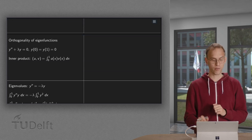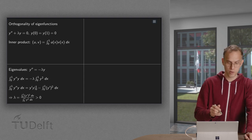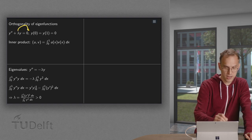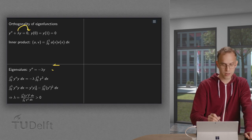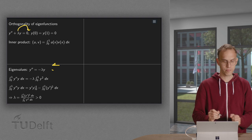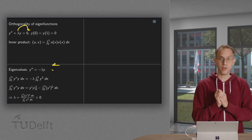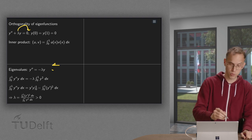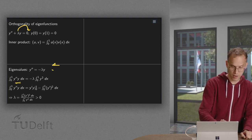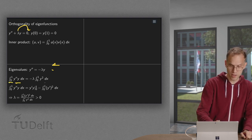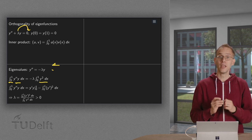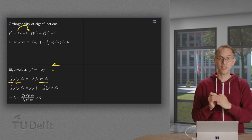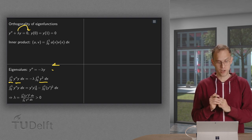We use the following trick. First we look at the eigenvalues. We bring the lambda y to the other side so we have y double prime equals minus lambda times y. Then we multiply both sides by y and integrate from zero to one.